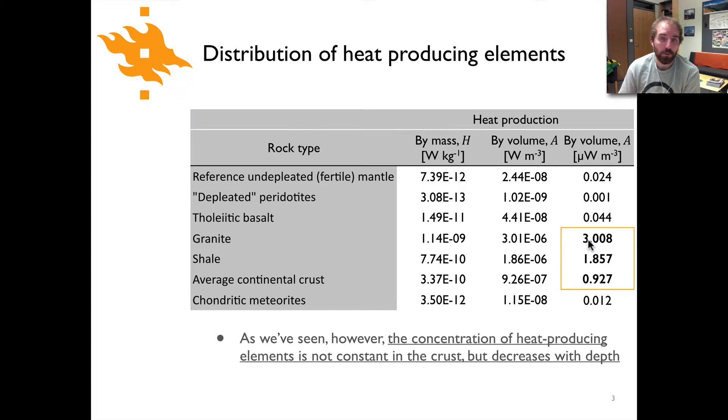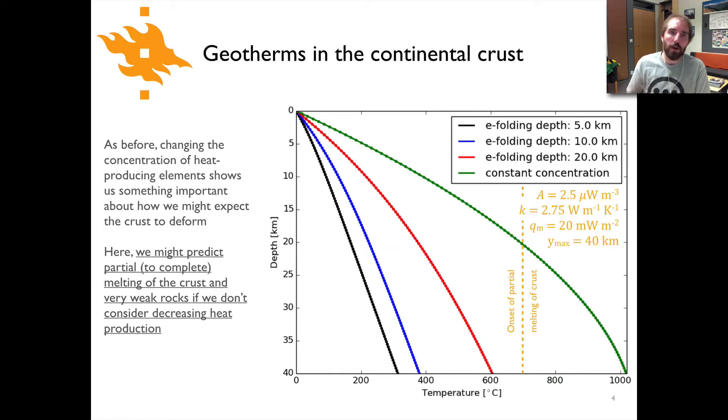In addition, in granites and shales we have values of maybe two to three microwatts per cubic meter for heat production versus the average for the continental crust that's less than one. This tells us that the concentration of heat producing elements is not constant within the crust but must decrease with depth.